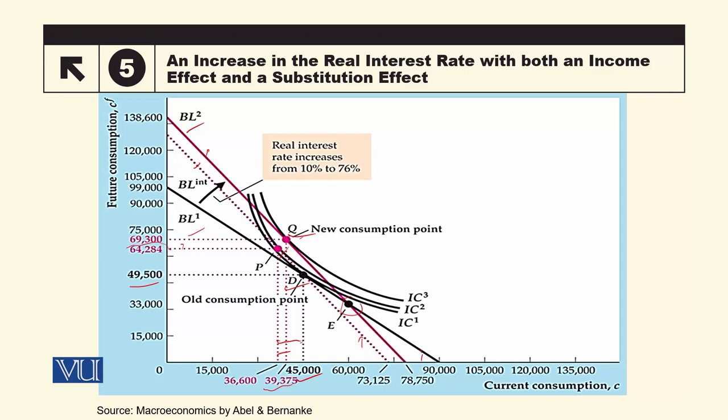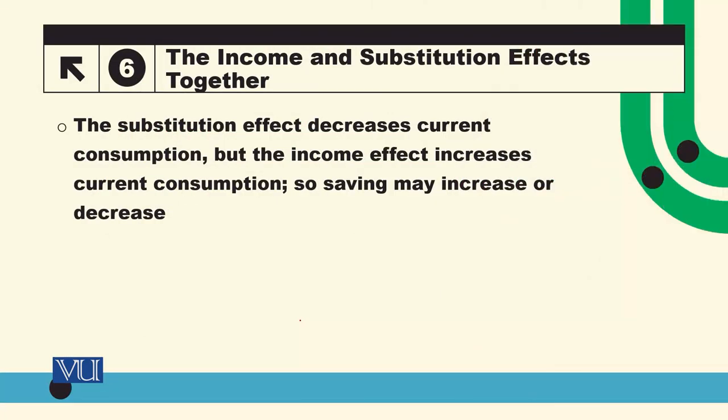Net effect میں substitution effect dominant ہے اور income effect relatively weak ہے — اس کا مطلب overall consumption کم ہو گئی ہے اور saving بڑھ گئی ہے۔ لیکن اس سے different scenario بھی ہو سکتا ہے: income effect stronger ہو اور substitution effect relatively weak ہو، یا دونوں ایک دوسرے کو offset کر دیں — یہ different cases آپ diagram کی مدد سے سمجھ سکتے ہیں۔ So: substitution effect decreases current consumption but the income effect increases current consumption, so saving may increase or decrease.